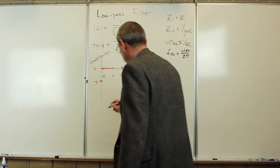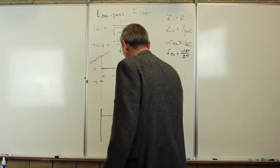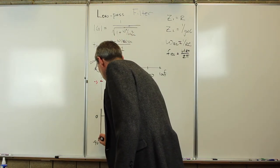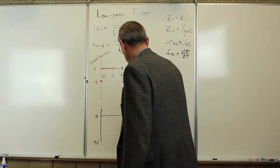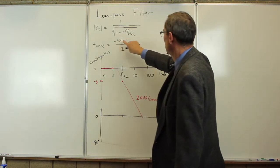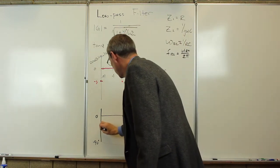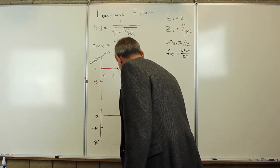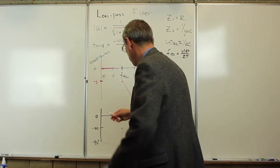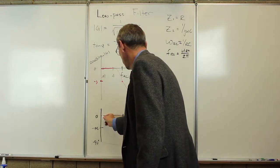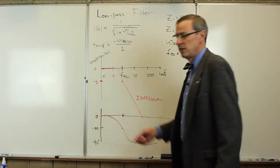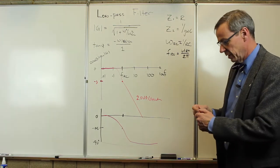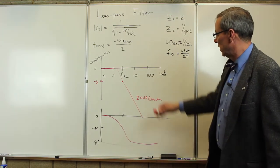We can also look at the phase on the same scale. We said that goes from 0 to minus 90 degrees. At characteristic frequency, when this is 1, we're going to get minus 45 degrees. So this starts out at 0 and then goes to 90 degrees at high frequency. So that's what the low-pass filter is doing in terms of the gain, fully characterized.